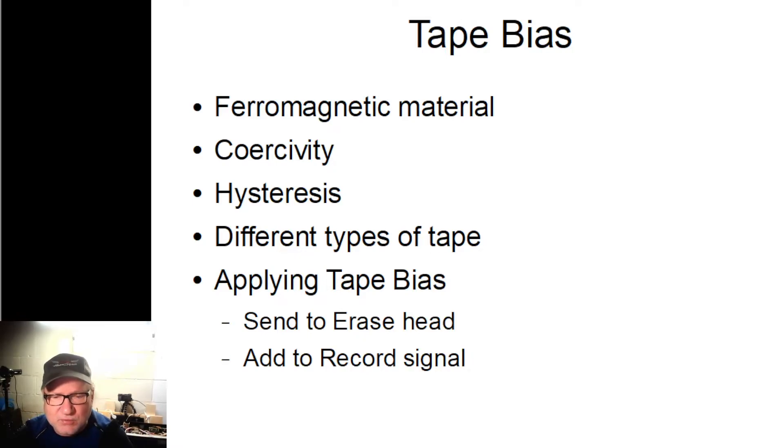The big difference about why reel-to-reels sound so much better is because the tape is bigger, the head gap is bigger. Instead of being the little tiny one, it's a bigger head gap. So you can put more signal on the tape at the same time. And it moves a lot faster than cassette tape. So you can put the material over a larger area of the tape.